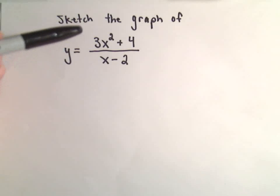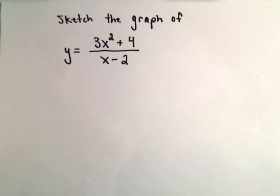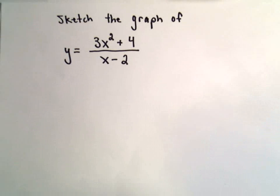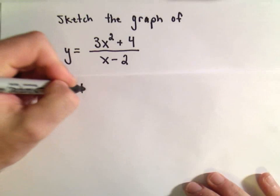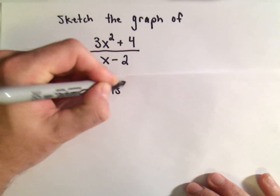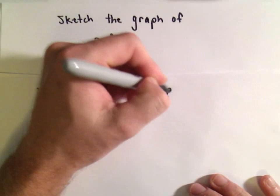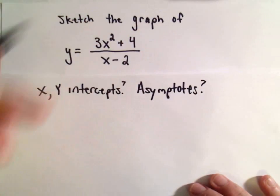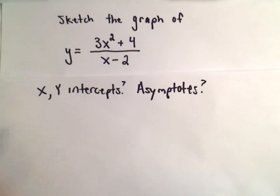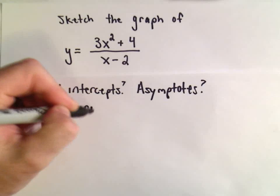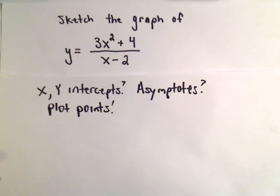In this video we're going to look at sketching the graph of the rational function (3x² + 4) / (x - 2). To do this, I'm going to think about x and y intercepts, asymptotes — vertical, horizontal, and slant or oblique asymptotes — and then I'm also going to plot some points to help get a better graph.